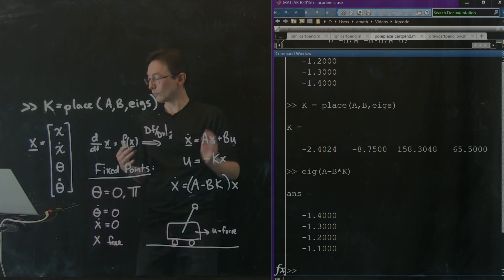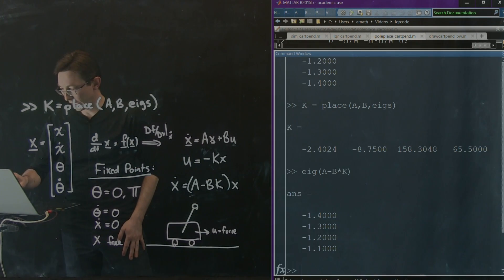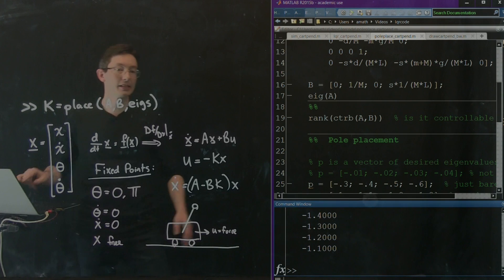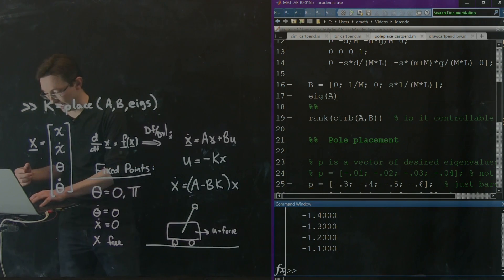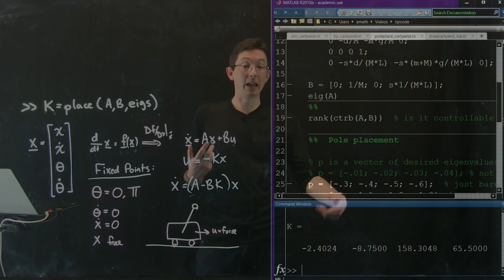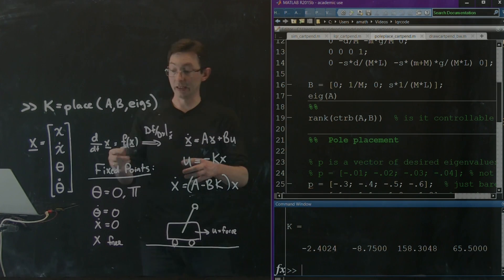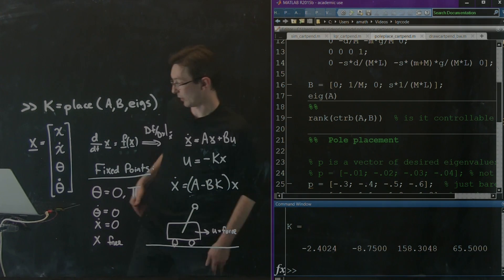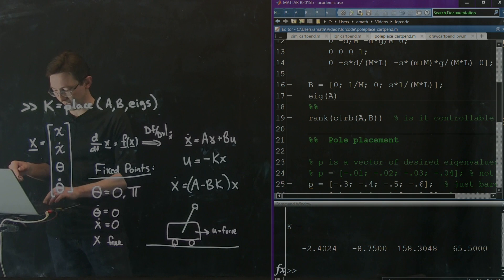Okay. Excellent. And so now once we have this, we can actually try to use this k matrix. So I'm just going to type k again. So we can try to use this k gain matrix to actually stabilize the non-linear system, which is really going to be fun. Okay. So I'm going to go back to my script.